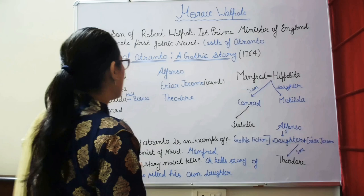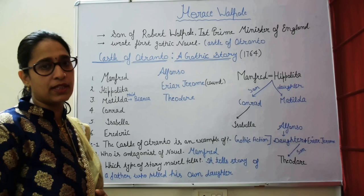Some questions are asked about Castle of Otranto. The name of the book is Castle of Otranto and its subtitle is 'A Gothic Story.'